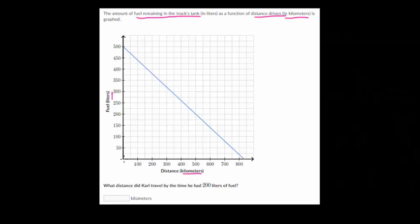And so it looks like right here would be 0 kilometers. So this is the amount of fuel remaining in the truck's tank as the car is driven. So if 0 kilometers have been driven, it looks like the car has 500 liters of fuel.